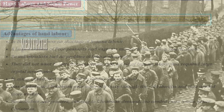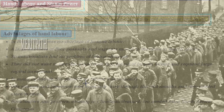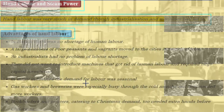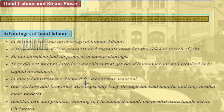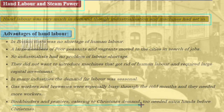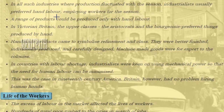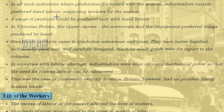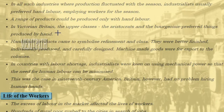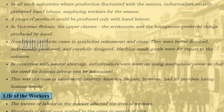Now let's see the advantages of hand labor in Britain. There was no shortage of human labor — a large number of poor peasants and migrants moved to cities in search of jobs, so industrialists had no problem of labor shortage. They did not want to introduce machines that got rid of human labor and required large capital investment. In many industries the demand for labor fluctuated seasonally — gas workers and breweries were especially busy through the cold months and needed more workers. Book binders and printers catering to Christmas demands also needed extra hands before Christmas. In such industries where production fluctuated with the season, industrialists usually preferred hand labor, employing workers for the season.